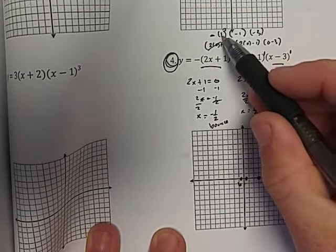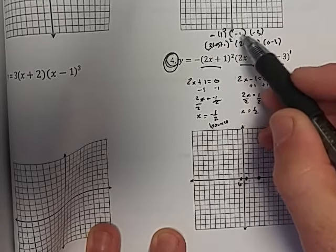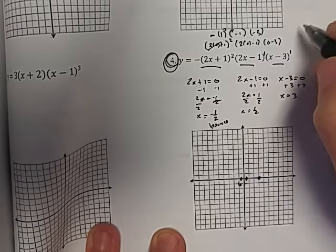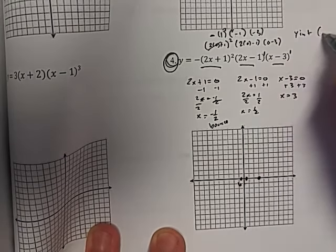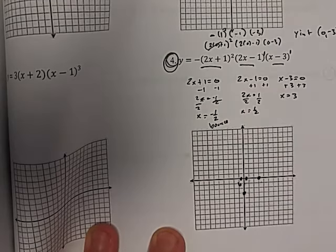So this one squared is still just one. Negative times negative one is positive one. Times negative three is negative three. So my y-intercept is going to be at negative three. So I'll put that on my graph as well.